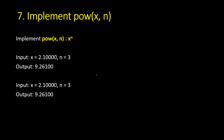The seventh problem is implementing the Power function: x raised to the power n. For example, 2.1 to the power 3 equals 2.1 × 2.1 × 2.1 = 9.26.